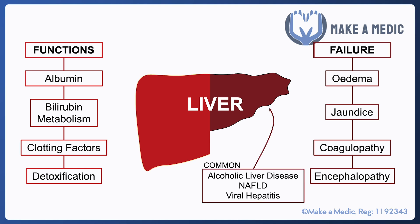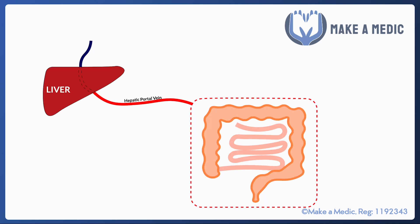As for causes, there are a few very common causes and they include alcoholic liver disease, non-alcoholic fatty liver disease, and viral hepatitis. The consequences of chronic liver disease can be better understood if we have a decent understanding of the anatomy in that region.